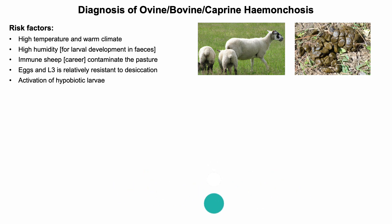Diagnosis of hemonchosis. For diagnosis, the clinician should be aware of risk factors. Higher prevalence is found in hot and humid conditions because these conditions are more favorable for larval development and survival. Previously infected sheep act as carriers and are a source of infection for other animals. Increased prevalence can also be seen with the advent of rain after a long dry period, due to activation of hypobiotic larvae in the abomasum or animals getting more infected larvae while grazing on green grass that grows after rainfall.